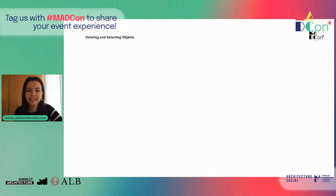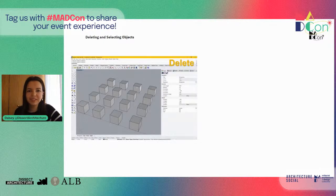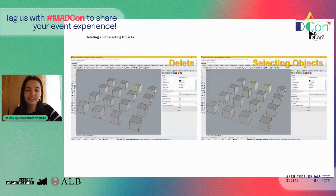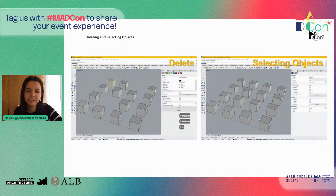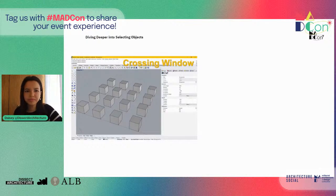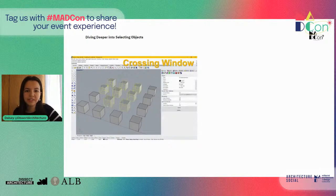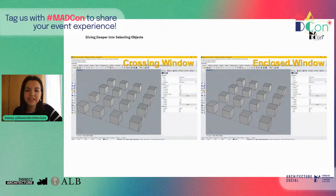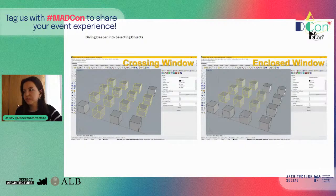Now let's go over how to delete and select objects. You can delete objects using the delete command or the delete key. When an object is selected, it turns yellow. To select more than one object, click the first, then hold Shift and click the others. For multiple objects, you can use either a crossing window or an enclosed window. A crossing window selects objects that either cross or are enclosed by the selection window, and is created by dragging from right to left. An enclosed window only selects objects completely enclosed by the window, and is created by dragging from left to right.